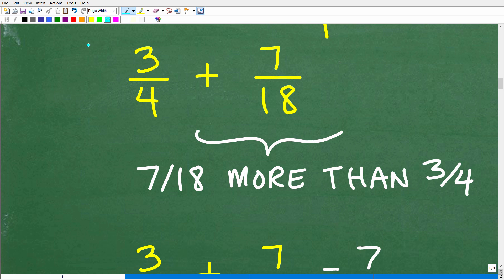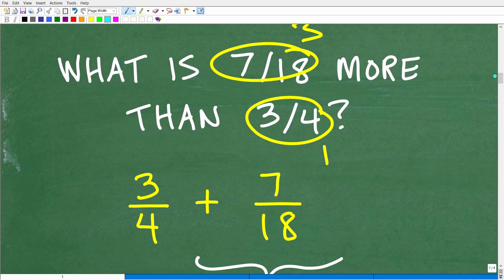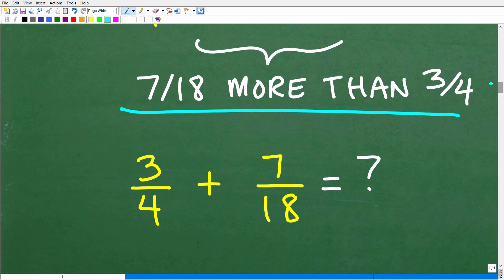So what is 7/18 more than 3/4? Again, if you're confused with this type of problem, always just replace these fraction numbers with something easier. And this is a great technique, again, with algebra problems or other problems. Always try to see if you can construct a simpler version of the problem to kind of model what's going on, think about how to solve that, and then just translate that logic over to your actual problem. What is 3 more than 1? What is $3 more than $1? Well, maybe that's like $4. So basically here we are adding these two fractions, 7/18 plus 3/4, and so now this becomes a fraction addition problem.